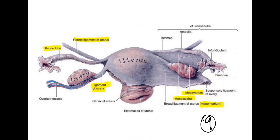We also have two other ligaments that we need to talk about, which are the ovarian ligaments. We have a ligament that attaches the ovary to the uterus and this is called the ligament of the ovary. The ligament of the ovary just attaches the ovary to the uterus so that in your pelvic girdle, you don't have your ovaries running about everywhere. That would just be ridiculous.